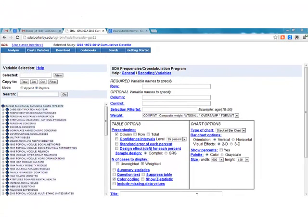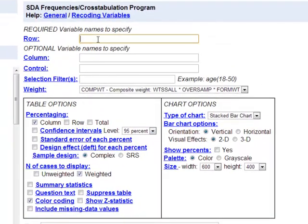Let's look at the same histogram created in SDA. So here I am in my frequencies cross tabulation page. My row variable is going to be educ. I'm not going to use a column variable or a control variable, but I am going to use a selection filter, and that's going to be all the data where year is equal to 2012.